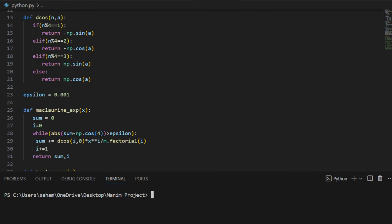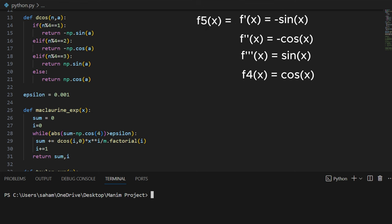The first derivative of cos is minus sine of x, second is minus cos x, third is sin x and fourth is cos x, back to the original function. The fifth derivative is same as the first derivative, the sixth same as second and so on. Therefore, we take modulo.